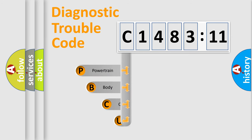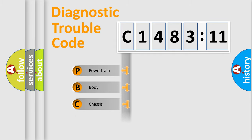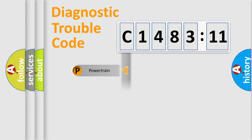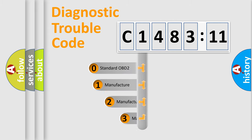First, let's look at the history of diagnostic fault code composition according to the OBD2 protocol, which is unified for all automakers since 2000. We divide the electric system of the automobile into four basic units: Powertrain, Body, Chassis, and Network.